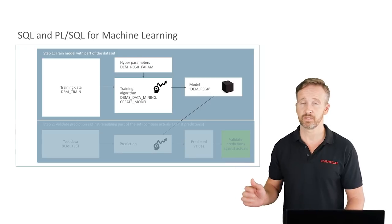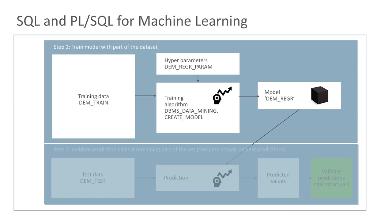Now we're ready for building the model — really getting into the parts of the database specific to machine learning. At the center is a command to create a model — creating and training the model are the same thing here. We do this by calling a specific PL/SQL package. When we call it, we specify the name of the table to train on — in this case DEM Train — and various parameters for the machine learning algorithm, provided as a hyperparameter table. Out of the PL/SQL command comes a model that exists in the database — not a table, but an entity in itself — and we'll name it demregr for regression.